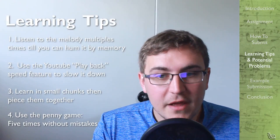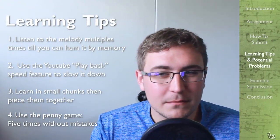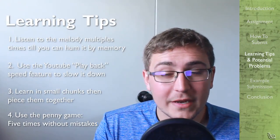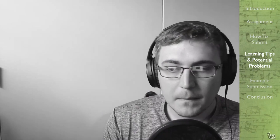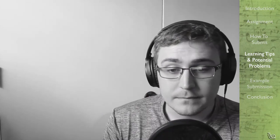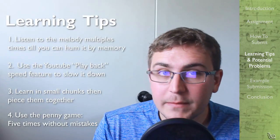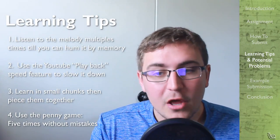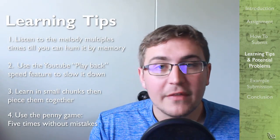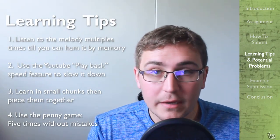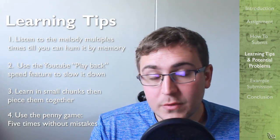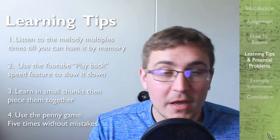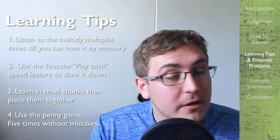Tips for learning and potential problems. The first thing to do when learning a melody by ear is to listen multiple times through the recording and be able to hum or sing the entire melody that you're trying to learn. Second, I recommend learning your song off of YouTube specifically. The reason for this is you can use the playback feature. In the bottom right hand corner, just click on the gear icon and then choose playback speed. Then select any number that's smaller than one. What this will do is slow down the audio but keep the pitch the same. Just know that the more you slow down the audio, the choppier it's going to get.